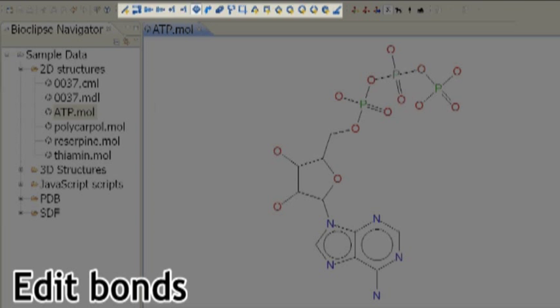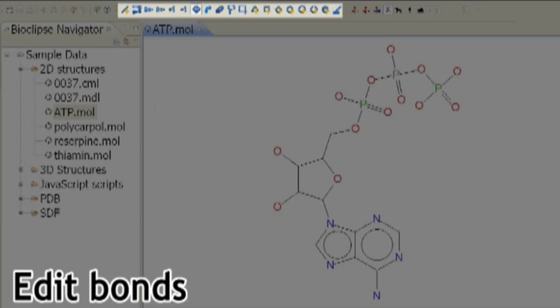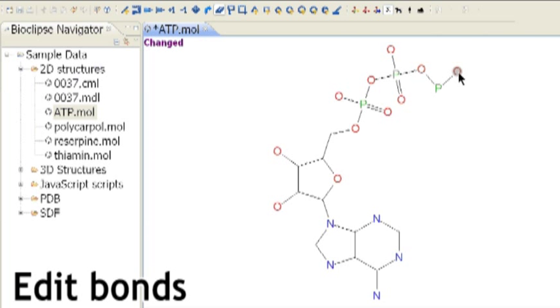From the top toolbar, select the eraser and click to erase the terminal oxygen and phosphorus atoms. Other tools let you add bonds and create new structures.